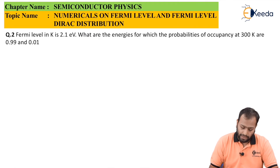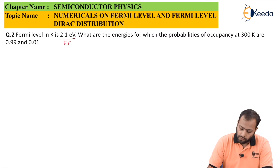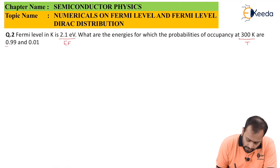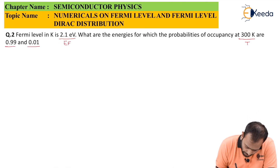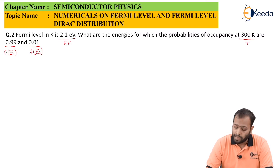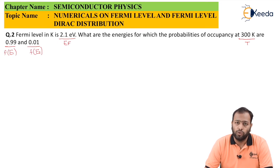The second question says: Fermi level in potassium (K) is 2.1 electron volts. What are the energies for which the probabilities of occupancy at 300 Kelvin are 0.99 and 0.01? So we want to find two energies: E1 for probability 0.99 and E2 for probability 0.01. Most exam questions are asked for 300 Kelvin, and the first step is always finding KT in electron volts.